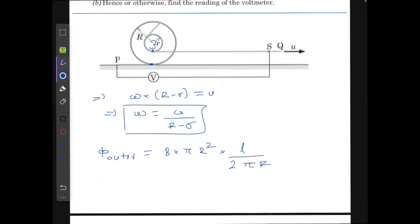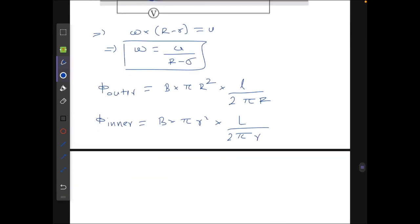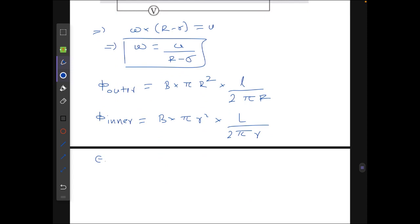multiplied by the number of turns, or the number of turns can also be written as L over 2 pi R, where I have assumed that L is the length of the wire wrapped on the outer coil. Similarly, phi inner will be equals to B times pi times small r square times l over 2 pi r. Here capital L and small l can be different.